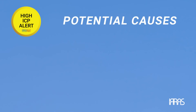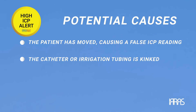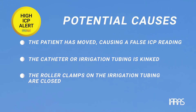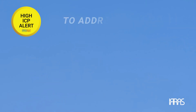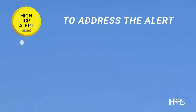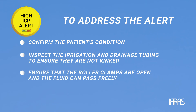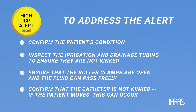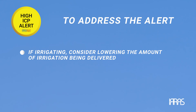Potential causes of a high ICP alert are: one, the patient has moved causing a false ICP reading; two, the catheter or irrigation tubing has kinked; three, the roller clamps on the irrigation or drainage tubing are closed; four, the irrigation volume is exceeding the drainage volume. To address a high ICP alert: one, confirm the patient's condition; two, inspect the irrigation and drainage tubing for kinks; three, ensure roller clamps are open; four, confirm the catheter is not kinked; five, if irrigating, consider lowering the amount of irrigation being delivered.